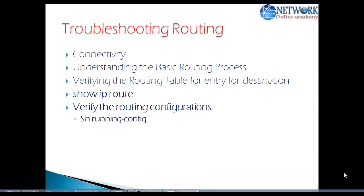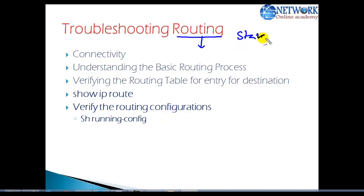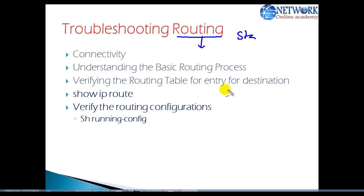In this video we are going to see some basic troubleshooting relating to routing. We'll start with how to troubleshoot your routing process. I'm not specifically discussing any one type of routing here — it can be static routing, default routing, RIP, EIGRP, or OSPF. There are a few basic things we need to keep in mind when we verify our routing configuration. We'll get into individual routing processes like RIP, EIGRP, and OSPF troubleshooting in separate videos.